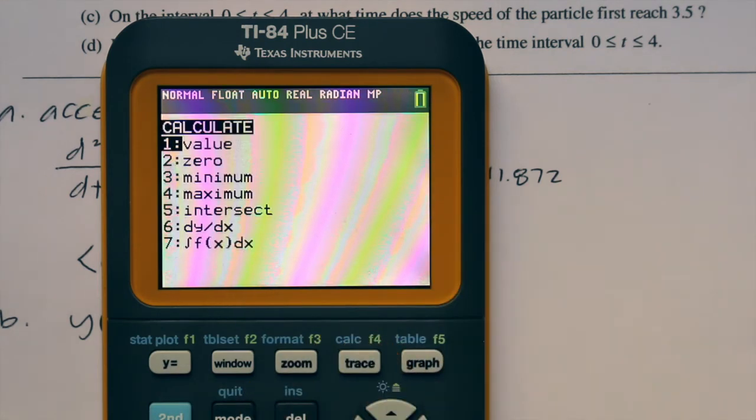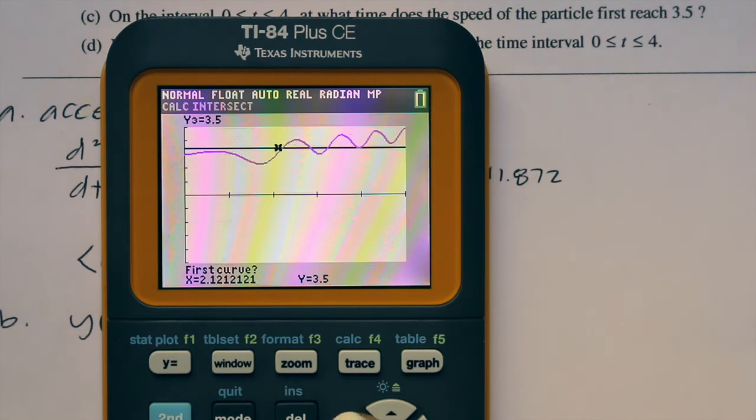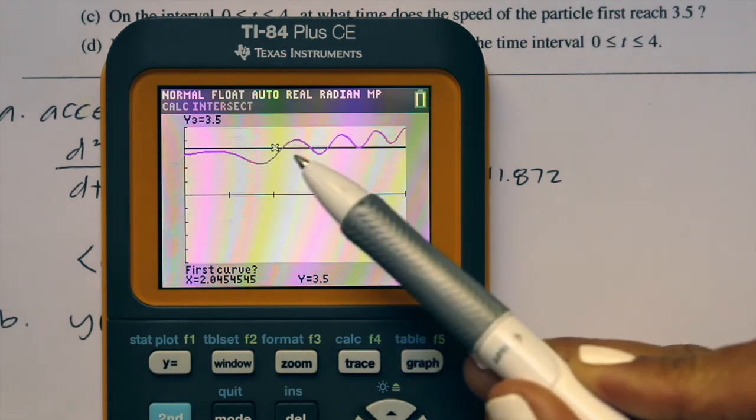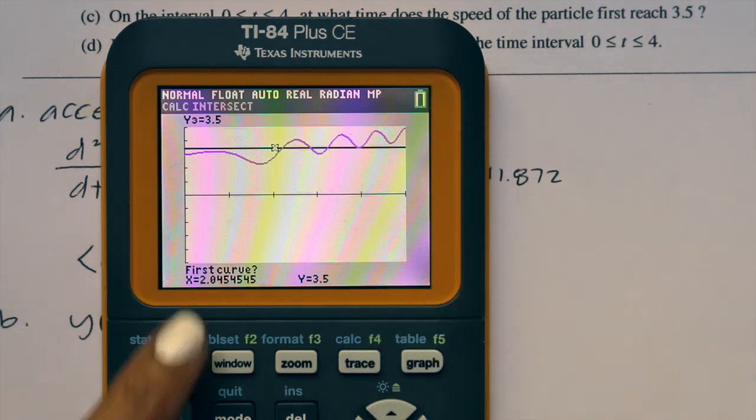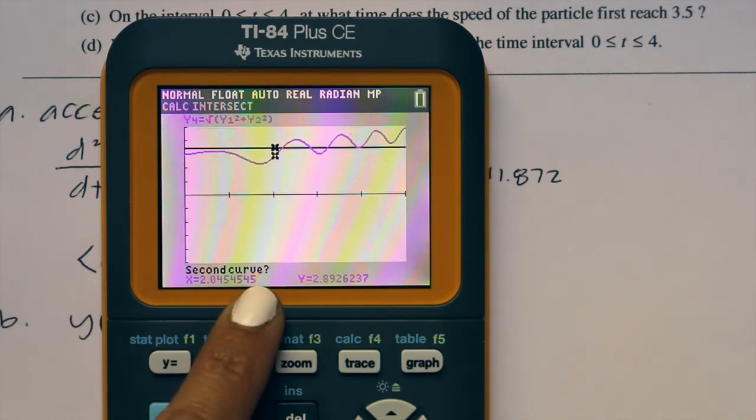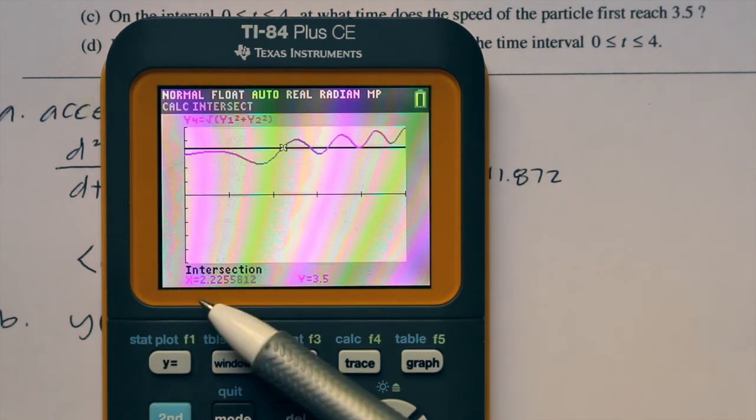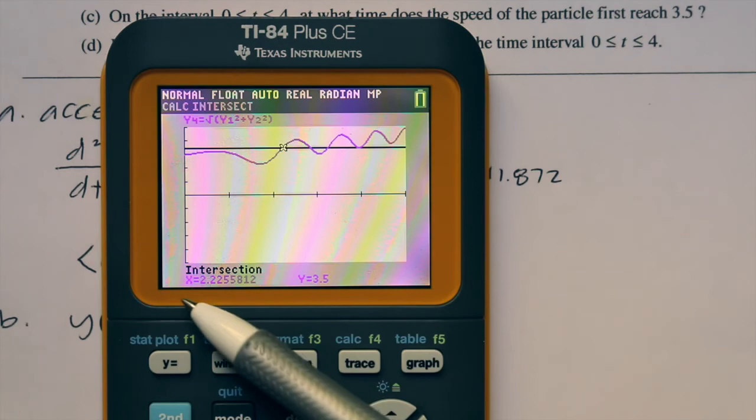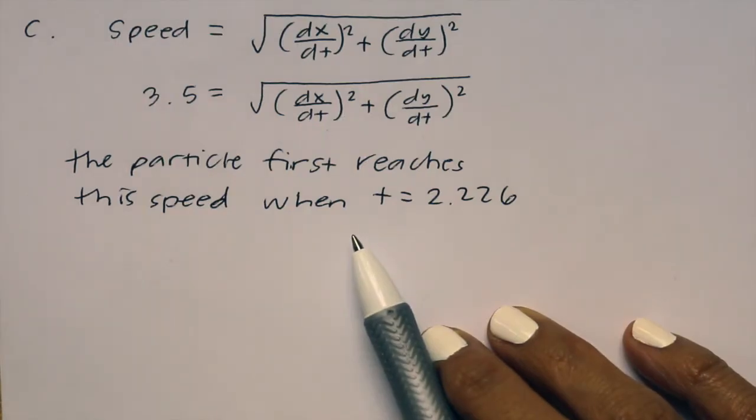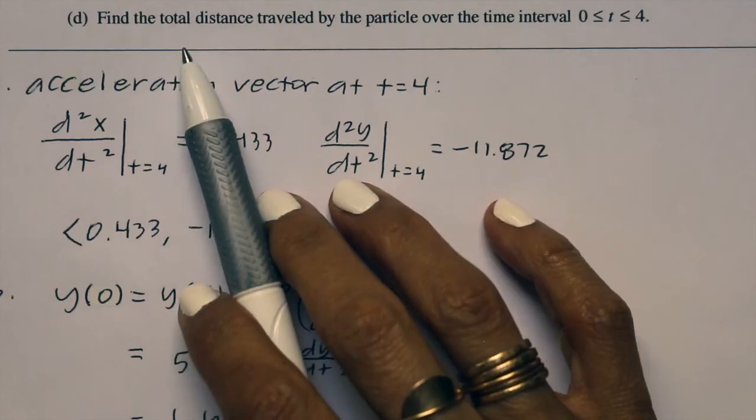I'm going to press second trace and we're going to use intersect. Arrow over to where they are intersecting, so I have the cursor near where the intersection is occurring. It says first curve, press enter. It says second curve, press enter. And then guess, press enter one more time. The intersection occurs at 2.226. So the particle first reaches the speed when t equals 2.226.